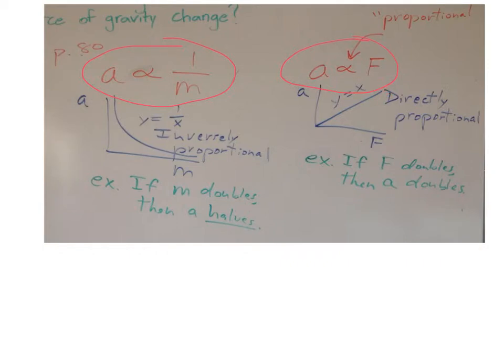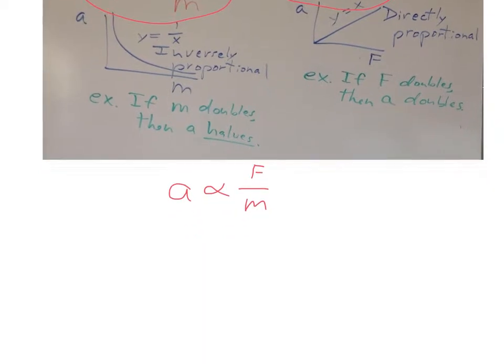We can take these two proportionalities and combine them into one. This is what it would look like: acceleration is proportional to force on top and mass on the bottom. So we can take this one step further by turning this into an equation.